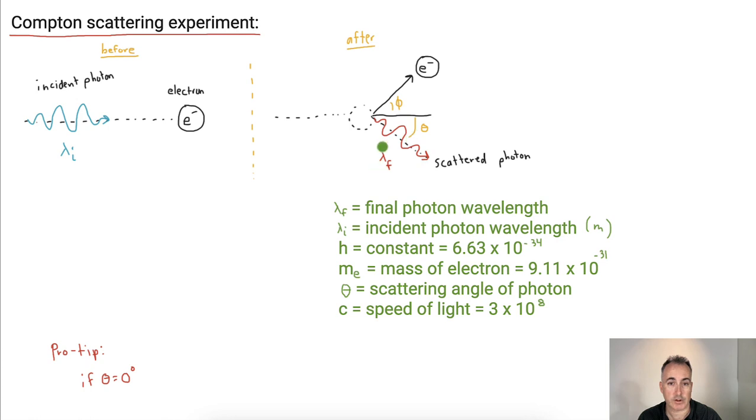At an angle theta. And we're going to call this final photon wavelength lambda f. So in other words, the wavelength will change. It'll go from something lower, that's why I drew it blue, to something larger, that's why I drew it red. Now we're going to have this angle measured in degrees.